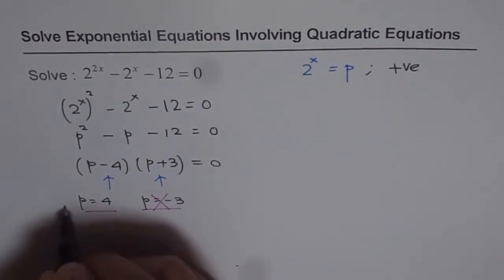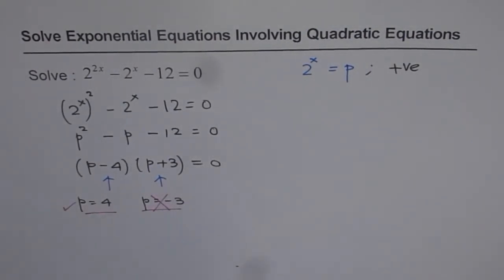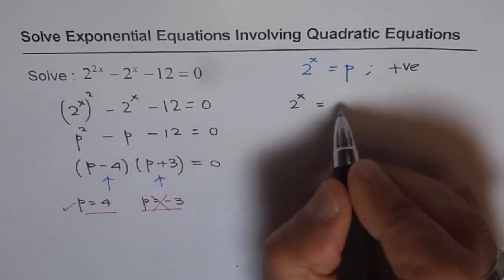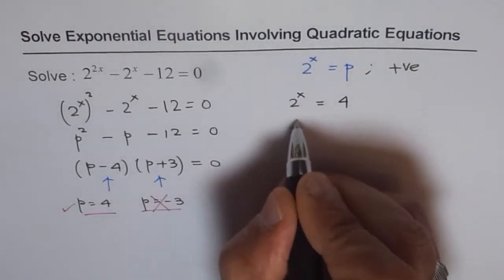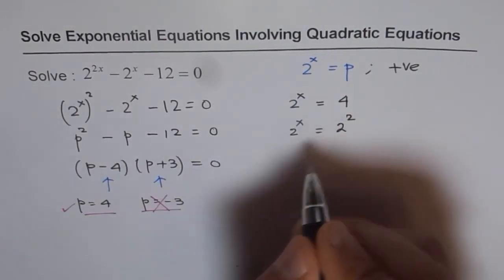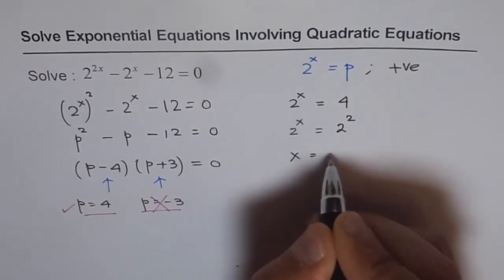However, that one is the correct value which can provide a solution. So I get 2 to the power of x equals p, which is 4. Now, 2 to the power of x can be written as 4 as 2 squared. And therefore, I get x equals 2.